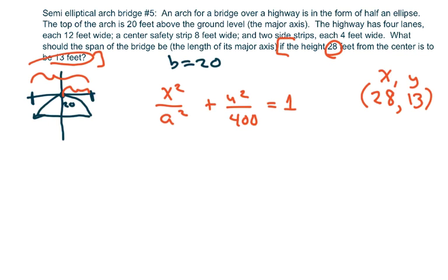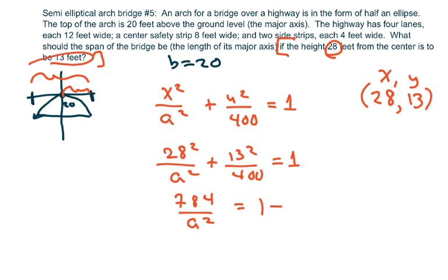So I'm going to plug in my X and Y and solve for A to get 28 squared over A squared plus 13 squared over 400 equals one. And I'm going to write all this out. So 28 squared is 784. So you get 784 over A squared equals one minus 169 over 400.